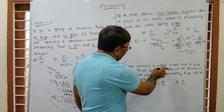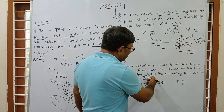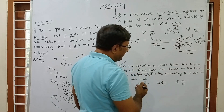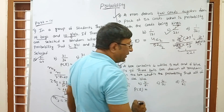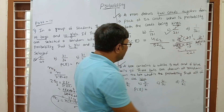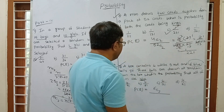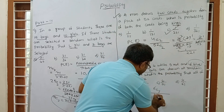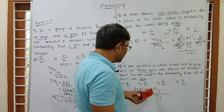Question 3: A box contains 4 white, 5 red and 6 blue balls. If 3 balls are drawn at random from the box, what is the probability that all of them are blue? Again we use combination. Favorable outcome: 6 blue balls, we need 3, so this is 6C3. Total: 4 + 5 + 6 = 15 balls, choosing 3, so 15C3. Probability = 6C3 / 15C3.